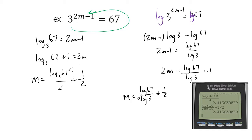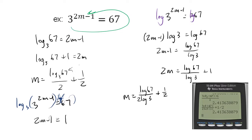It would also benefit you to take a specific logarithm of both sides. For example, if we took log base 3 of both sides of 3 to the 2m minus 1 equals 67, we'd end up with 2m minus 1 equals log base 3 of 67 — the same thing we had before. Just different ways to approach the same problem, and knowing they're the same can be very useful.